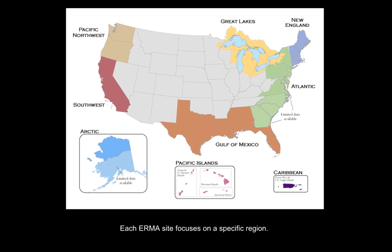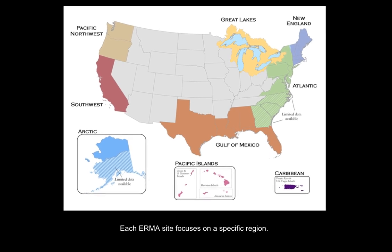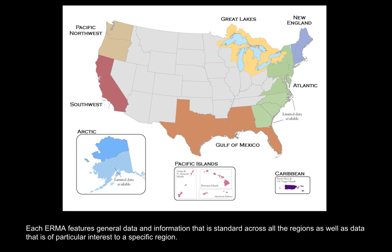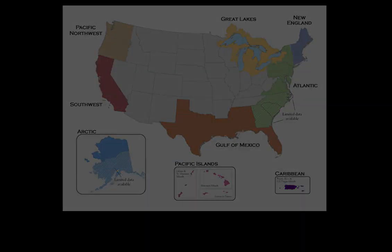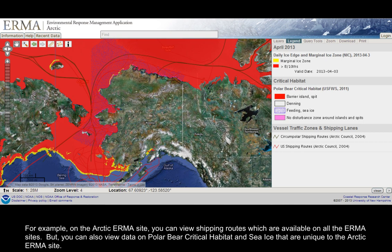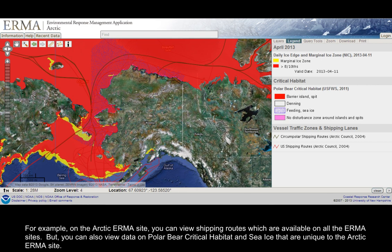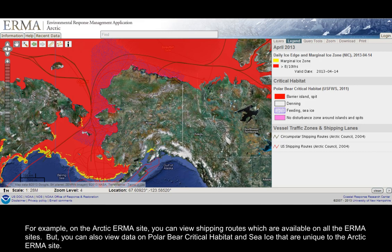Each IRMA site focuses on a specific region. This video will feature several different regional sites. Each IRMA features general data and information that is standard across all the regions, as well as data that is of particular interest to a specific region. For example, on the Arctic IRMA site you can view shipping routes, which are available on all the IRMA sites, but you can also view data on polar bear critical habitat and sea ice that are unique to the Arctic IRMA site.